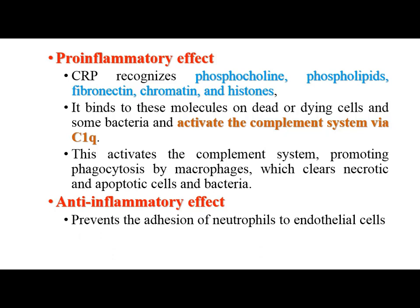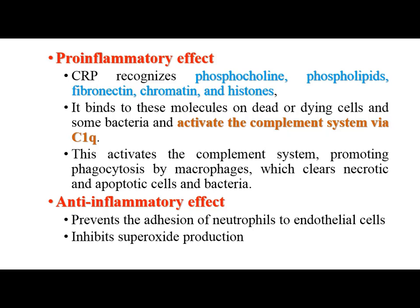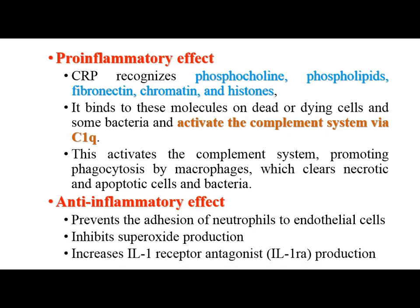The complement byproducts will help in the opsonization by macrophages, clearing the necrotic and apoptotic cells. For the anti-inflammatory effects, CRP prevents the adhesion of neutrophils to endothelial cells, thereby preventing the marginalization and extravasation of neutrophils. It inhibits superoxide production and increases interleukin-1 receptor antagonist production, thereby reducing inflammation.